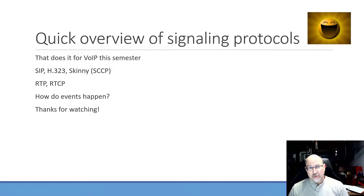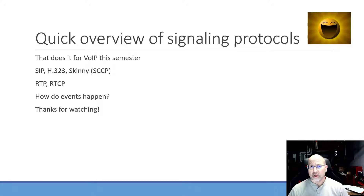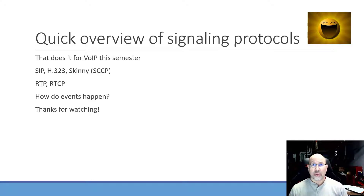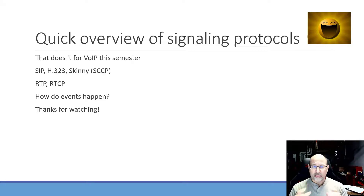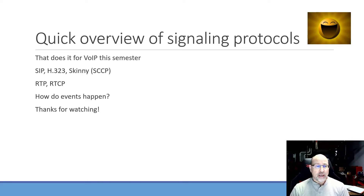That wraps up VoIP for this semester. We covered the signaling protocols — Skinny, SIP, and H.323 — plus transport via RTP and RTCP. The key things to understand are how all the events happen: registration, interface population, getting a phone number, dialing, getting tones across the wire, negotiating media parameters, and hanging up. Each protocol has its own mechanism for handling all of that. Thanks for watching — may those VoIP packets always reach the earphone of the destination!